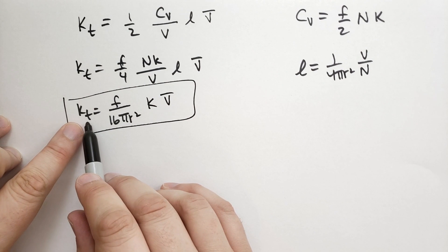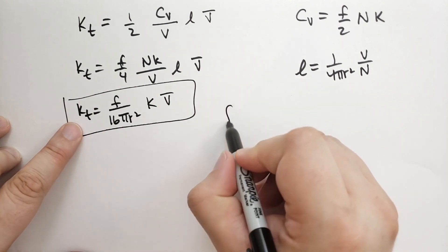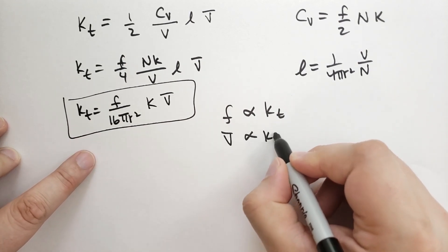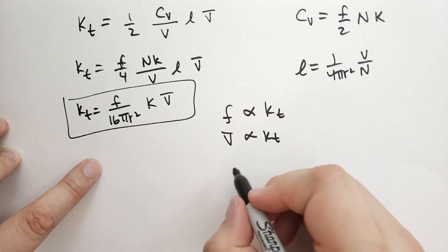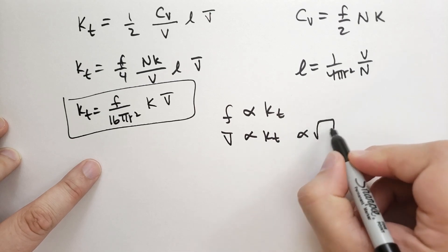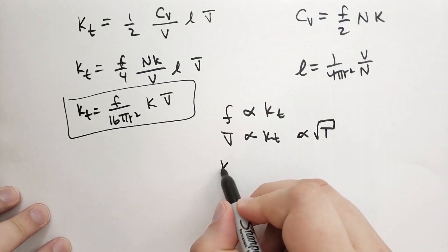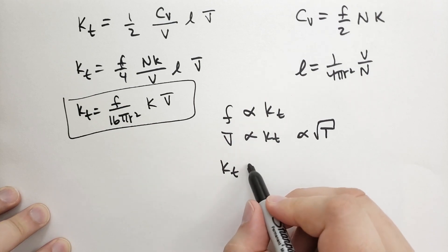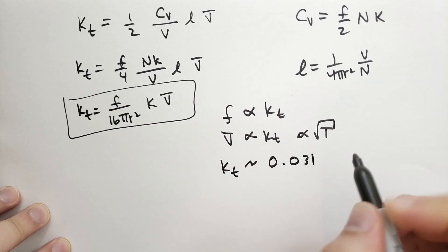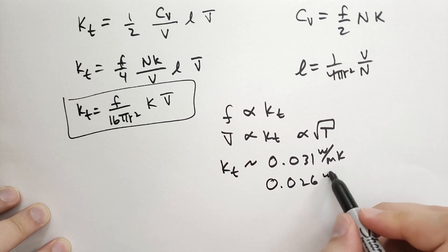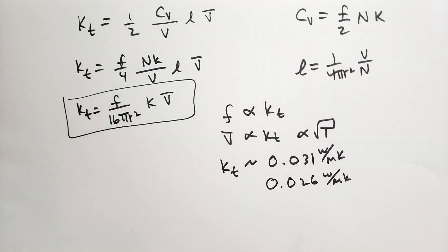So the heat conductivity of an ideal gas depends, it's proportional to the KT. It's also proportional to the average velocity. And the average velocity, if you recall, is proportional to the square root of the temperature. This comes from the equipartition theorem. Using these numbers, we calculate that for air, we should get KT is about equal to 0.031 watts per meter Kelvin, which is very close to the actual value of 0.026 watts per meters Kelvin. This exercise shows how we can use kinetic theory to solve very difficult problems that thermodynamics itself can't solve, especially how things change over time.